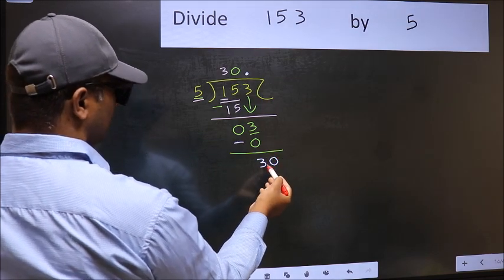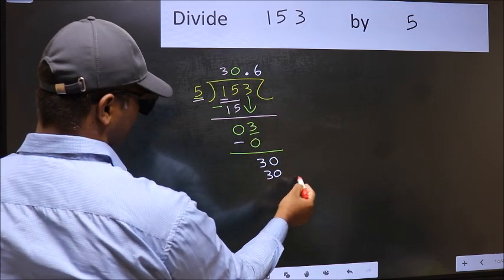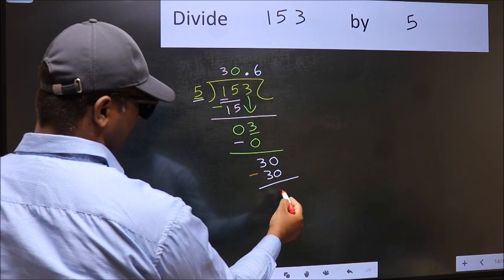So 30. When do we get 30 in the 5 table? 5 times 6, 30. Now you should subtract. 30 minus 30, 0.